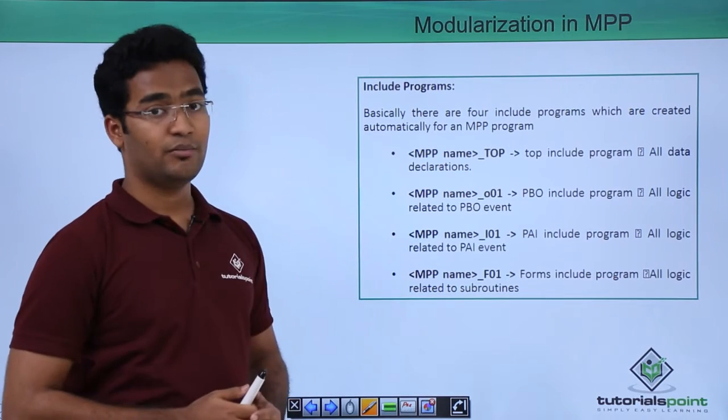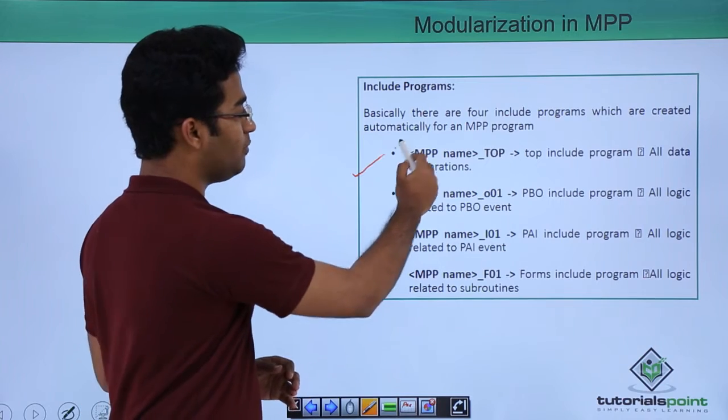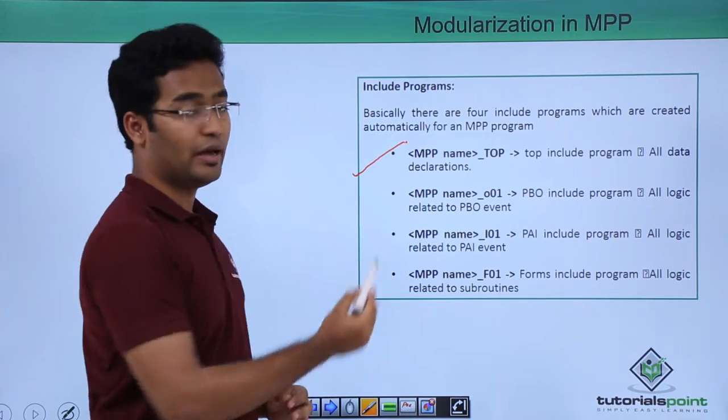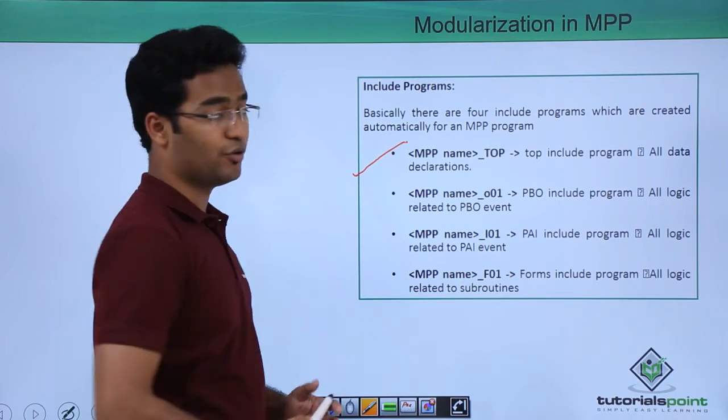Then we have modularization in MPP that is the include program. Basically there are 4 include programs MPP name underscore and then top. Similarly O01, I01 and F01.